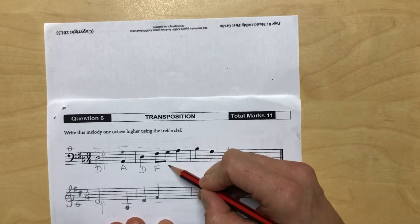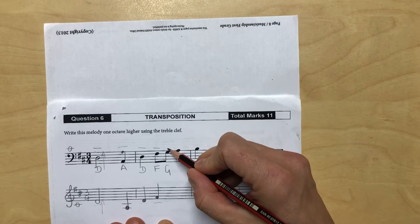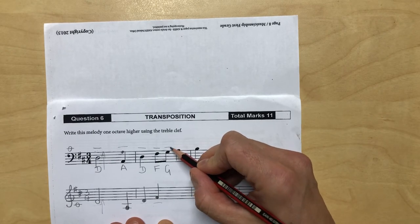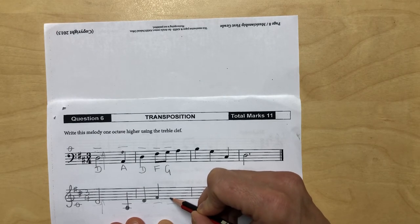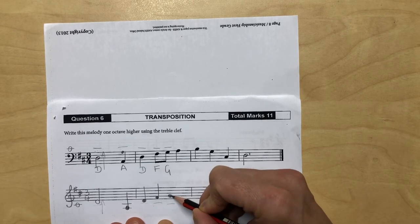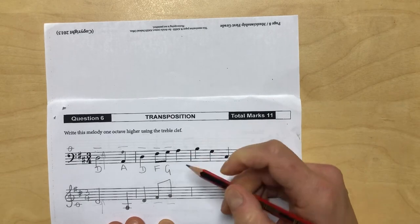This is a G - all cows eat grass. One, two, three, four is middle C, four is middle C, five, six, seven, eight. Another G. Make sure you make them quavers if that's necessary.